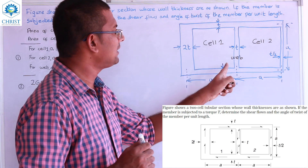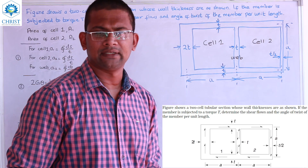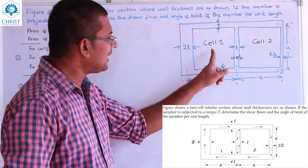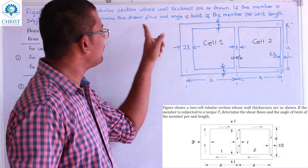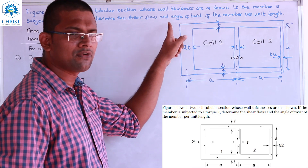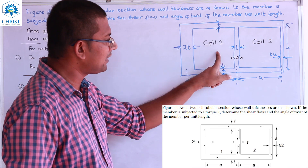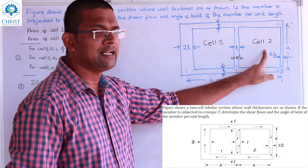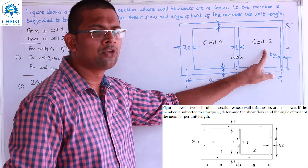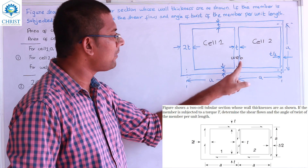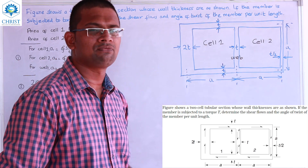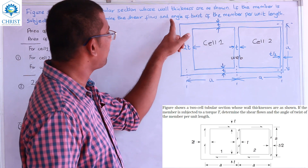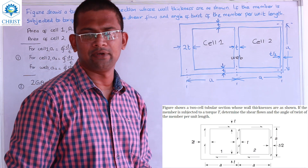We have a web. In cell 1 we have shear flow Q1. In cell 2 we have shear flow Q2. In the web we have shear flow Q12. Then we have the angle of twist theta.